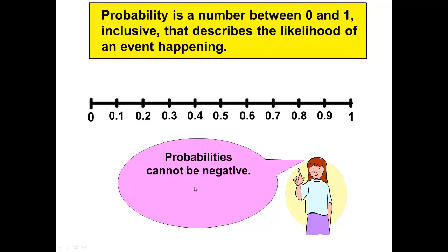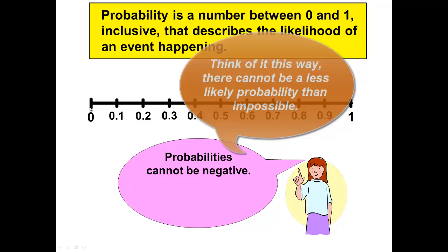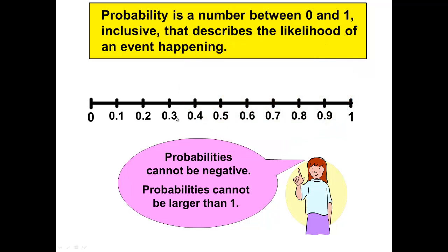Probabilities cannot be negative. 0 is the smallest we can get. They cannot be larger than 1. We can't have a more than 100% chance of something happening. 1 is the largest that they can be.